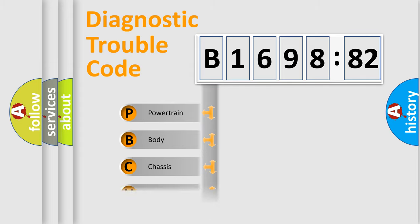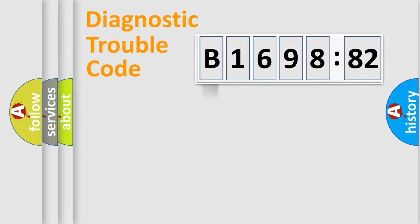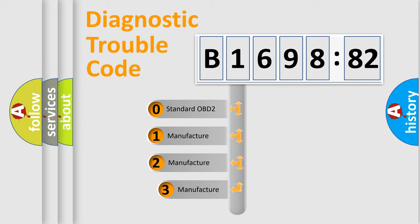We divide the electric system of automobile into four basic units: powertrain, body, chassis, and network. This distribution is defined in the first character code.